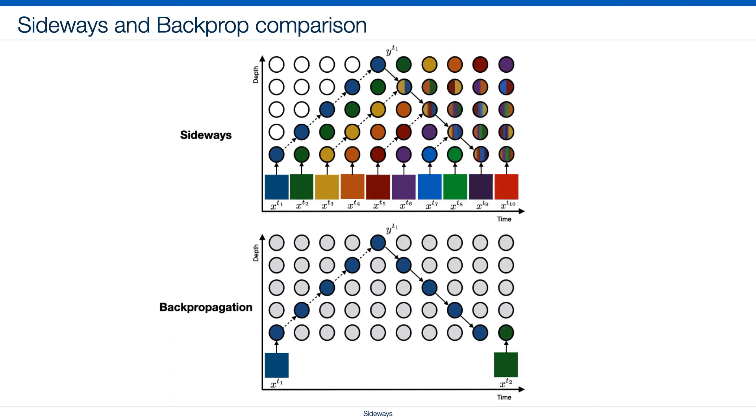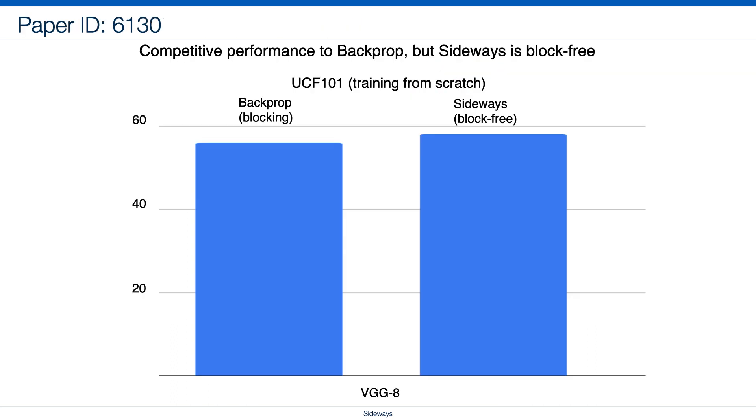When training progresses, Sideways integrates more information from different frames. Finally, we show that Sideways is a valid training mechanism. Check out our paper for more details.